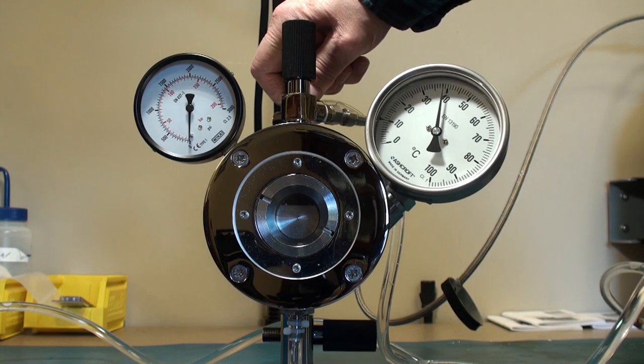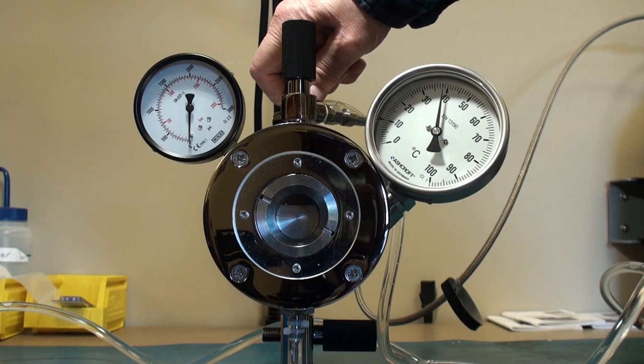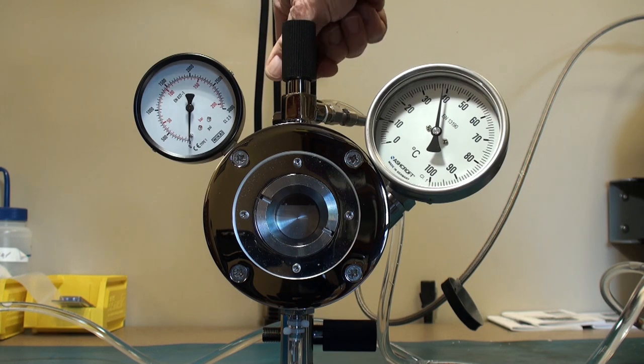If you can hand tighten the valve and it still leaks, well then it's time to have the valve rebuilt. There are rebuild kits available. You can take the valve apart and replace all the inner components. And that usually solves the problem.